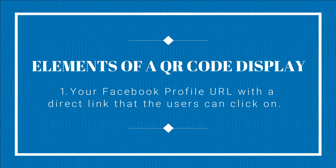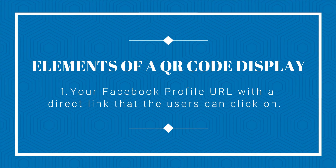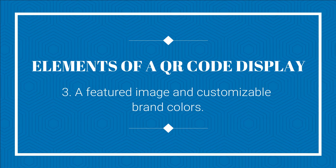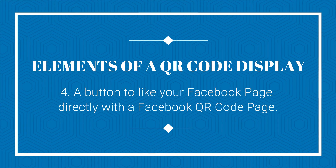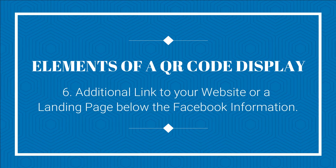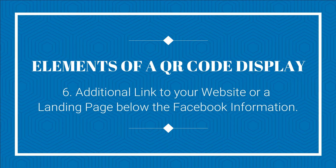Here are some elements of a Facebook QR code display: your Facebook profile URL with a direct link that users can click on; a headline and a short description of your Facebook business page; a featured image and customizable brand colors; a button to like your Facebook page directly with the Facebook QR code page; the amount of Facebook page likes; and an additional link to your website or landing page below the Facebook information.